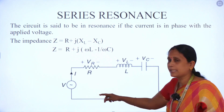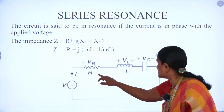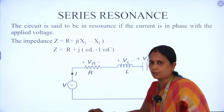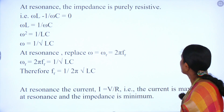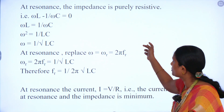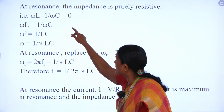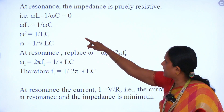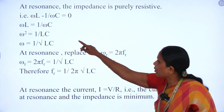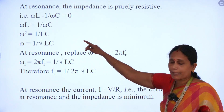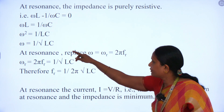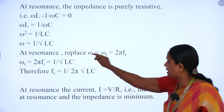This is the circuit for series resonance where resistance, inductance, and capacitance are all connected in series, connected to the voltage source. At resonance, the impedance is purely resistive because XL − XC = 0. That is, ωL − 1/(ωC) = 0, therefore ωL = 1/(ωC), giving ω² = 1/(LC), and so ω = 1/√(LC).